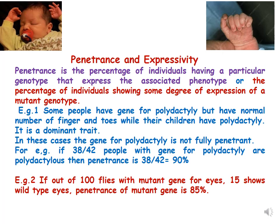For example, some people have a gene for polydactyly, which means more than five fingers. Although they have this gene for polydactyly, they have a normal number of fingers and toes. We expect their children to have normal fingers — five fingers — but their children actually have polydactyly.